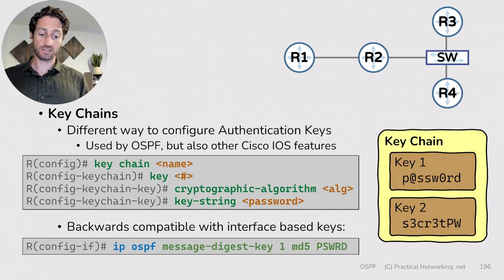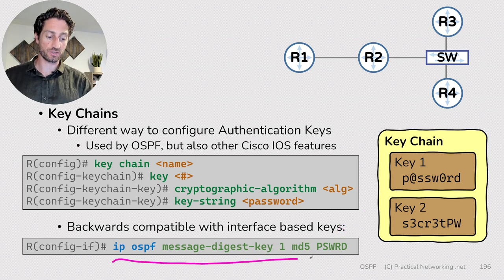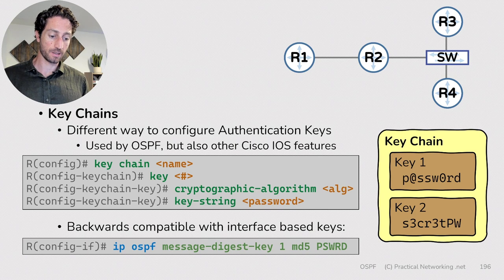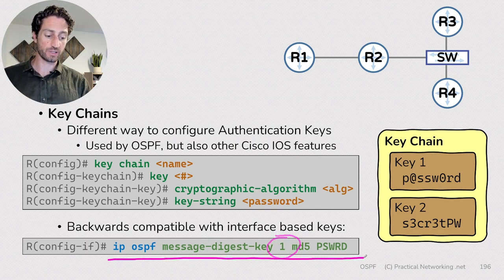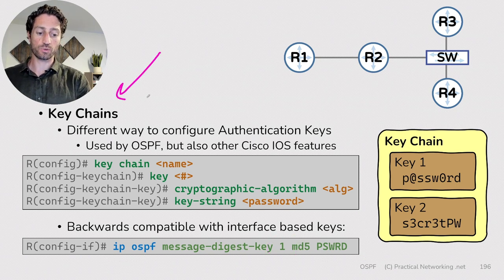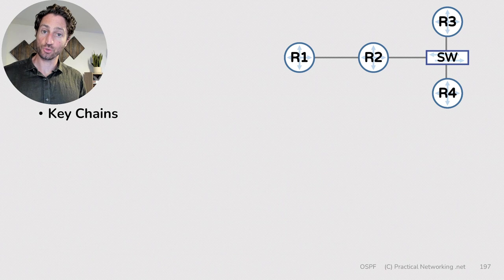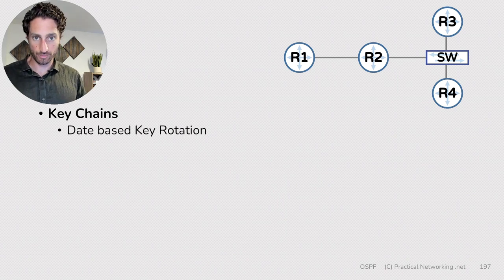We showed that keychain-based hash authentication is backwards compatible with the older method when using MD5. But how does key rotation work with keychains? It works differently — keychains use a date-based key rotation mechanism.